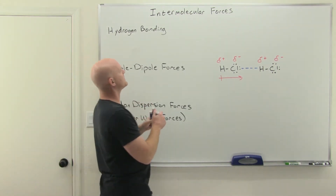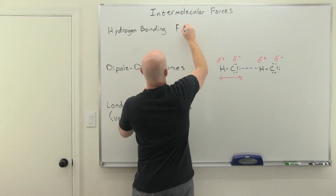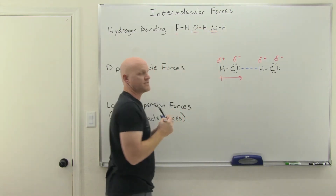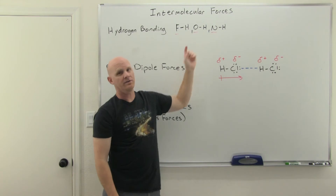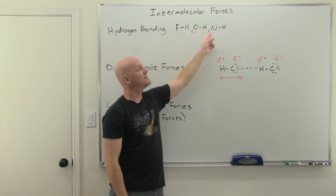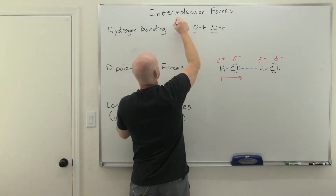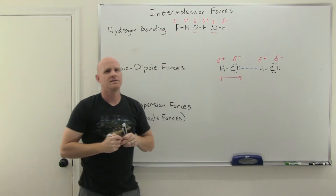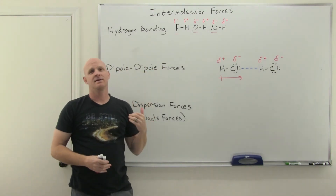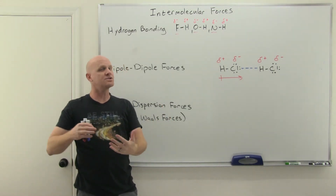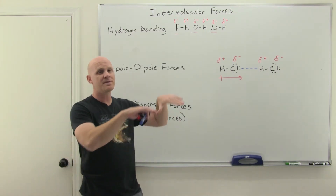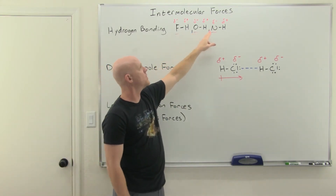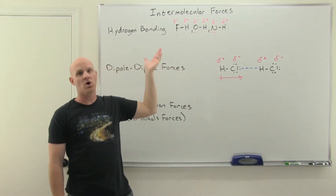Not all hydrogens can participate in hydrogen bonding. You've got to have one of these three really polar bonds: a bond between fluorine and hydrogen (F-H), a bond between oxygen and hydrogen (O-H), or a bond between nitrogen and hydrogen (N-H). I like to think of these as the FON elements. Because of the large differences in electronegativity, you end up with a significant partial negative and partial positive charge — enough to warrant their own category called hydrogen bonding.